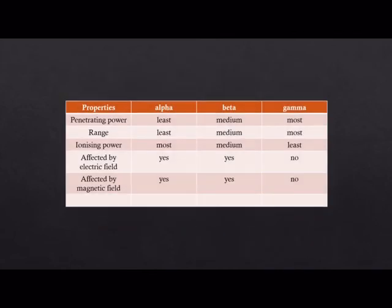Let us summarize all the properties of this radiation. Alpha particle has the least penetrating power, beta particle has medium penetrating power, gamma has the most penetrating power. Alpha has least range, beta has medium range, gamma has the most range.